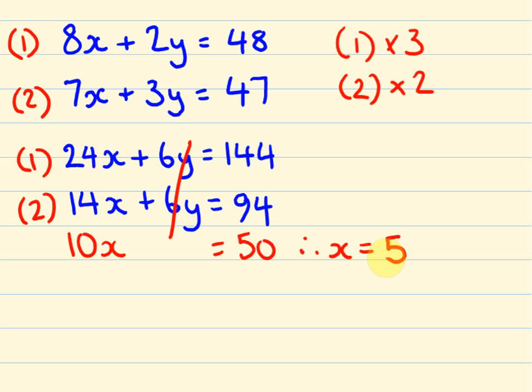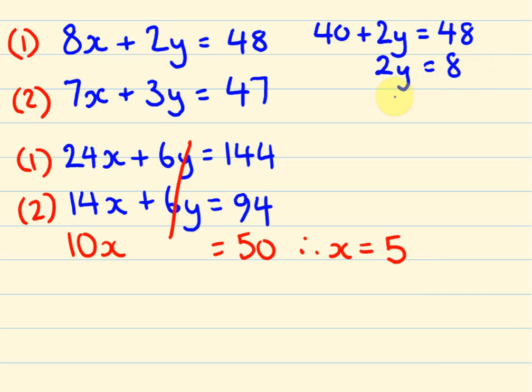Okay, so we're going to substitute our value in now of X to work out what Y is. So we'll do it for equation 1. So, if X equals 5, 5 times 8 equals 40. 40 plus 2Y equals 48. So we can take 40 off both sides. We're going to end up with 2Y, take it off there. We're going to take it off here as well. So we're going to end up with 48 take 40 which is going to be 8. Therefore, Y equals 4.